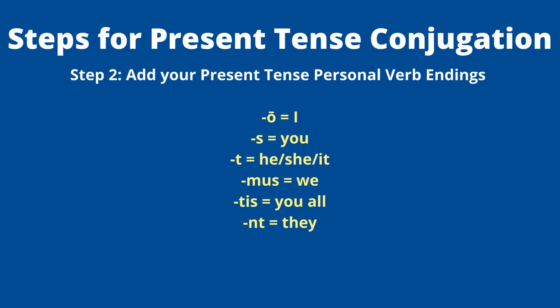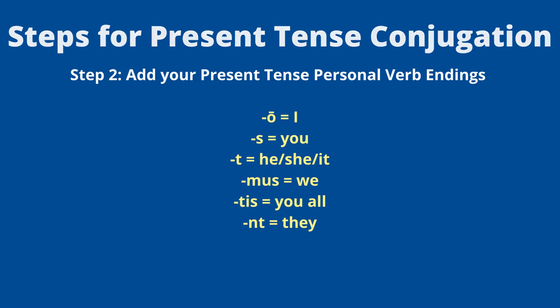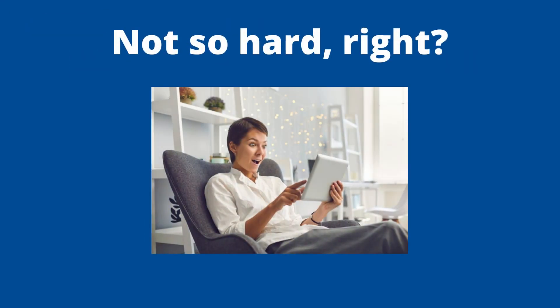Step two: we add our personal verb endings for the present tense — o, s, t, mus, tis, nt. The long 'o' means 'I'; 's' means 'you'; 't' means 'he, she, or it'; 'mus' means 'we'; 'tis' means 'you all'; and 'nt' means 'they.' So the basic steps are: go to the infinitive, drop the '-re,' and add your ending. Pretty straightforward — two steps!